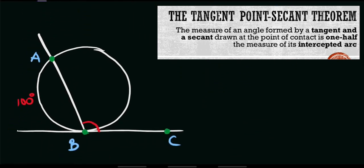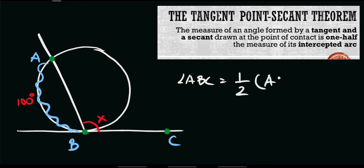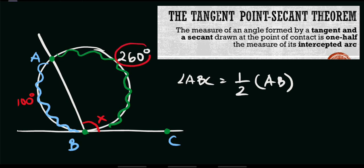Next, for our last example, we are asked to solve for the value of angle ABC, which we'll mark as X. According to our figure, the given arc is equal to 100 degrees. According to our theorem, the value of angle ABC equals one half of its intercepted arc. The problem is its intercepted arc is another part of the circle. We will use the concept of a circle to answer this. Since the blue part is 100 degrees, and the entire circle is 360 degrees, the green part is 360 minus 100, which equals 260 degrees. We will use this value in our formula to solve for angle X.